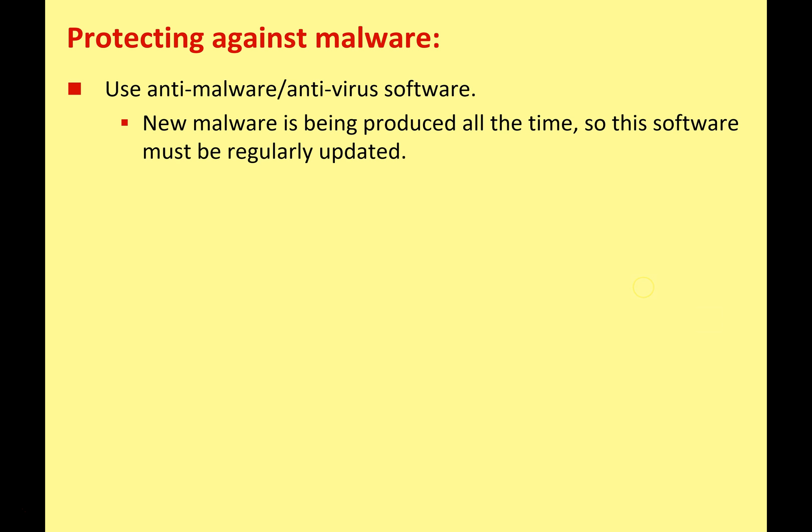So how do we protect ourselves against malicious software? The classic example is to use antivirus — or more precisely, anti-malware — software. There are lots of famous brands you can download and install on your computer. Just be aware that new viruses, trojans, and worms are being produced all the time, so you have to keep this software up to date. There's no point having antivirus software if you haven't updated it for two years.